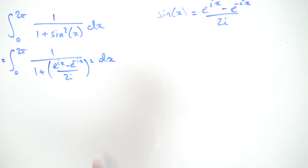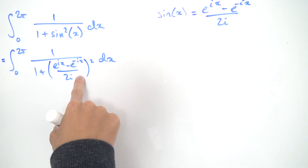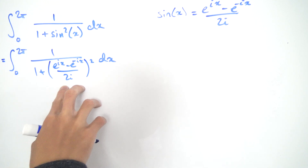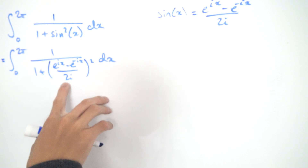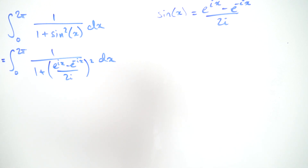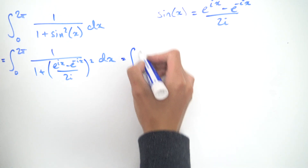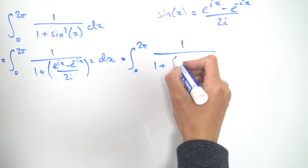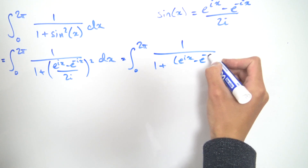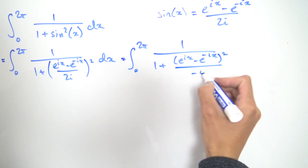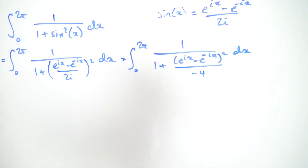Next, I want to distribute this squared into the numerator and the denominator. On the numerator we can keep it as is, but on the denominator, if we have 2i squared, well 2 squared is 4, and i squared is minus 1, so we get minus 4 on the denominator. Carrying out the operation, we get the integral from 0 to 2π of 1 over 1 plus (e to the ix minus e to the minus ix) squared, divided by minus 4, integrated with respect to x.